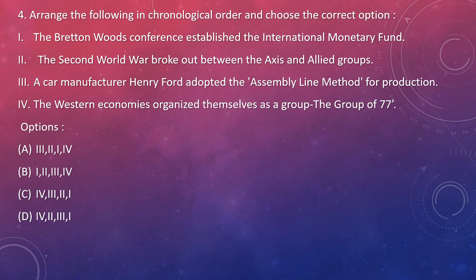The sentences are: the Bretton Woods Conference established the International Monetary Fund; the Second World War broke out between the Axis and Allied groups; car manufacturer Henry Ford adopted the assembly line method for production; and the western economies organized themselves as the Group of 77. We know Henry Ford adopting the assembly line method was the first event. So option A starts correctly, and we can confirm it as the answer.